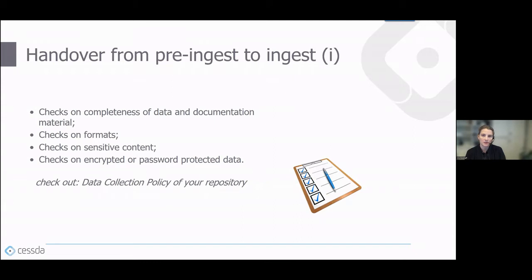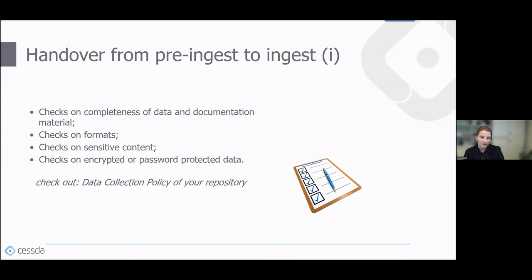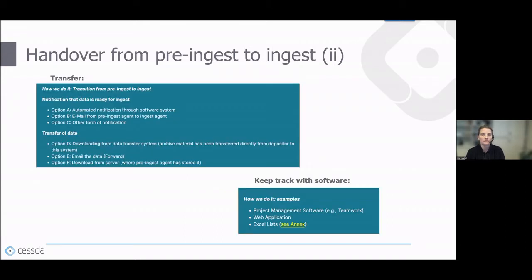The handover from pre-ingest to ingest is done very differently across archives. But in any case, there are checks on completeness of data and documentation material, checks on formats, sensitive content, and whether data is encrypted or password protected — and you may need to get back to the depositor to fix issues. You also make backup copies of the SIP and confirm the data fits your repository's data collection policy.